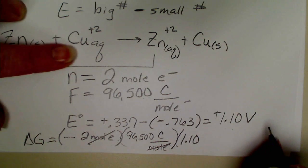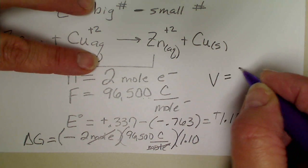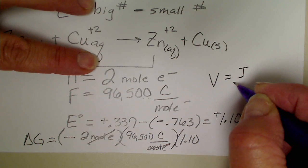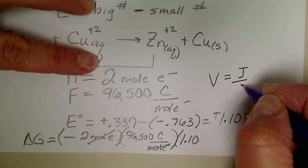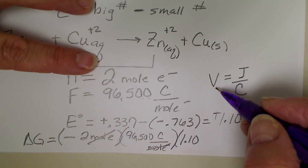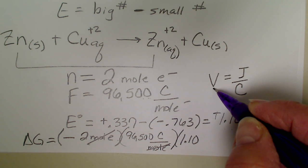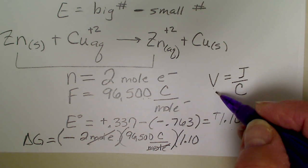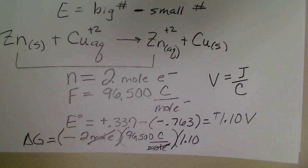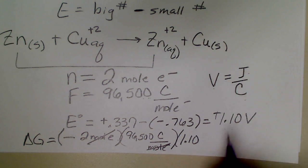If we plug this into the delta G equation, we get negative 2, and that's really 2 moles of electrons. Faraday's constant is 96,500 coulombs per mole of electrons, so our moles of electrons cancel. The potential is 1.10 volts.